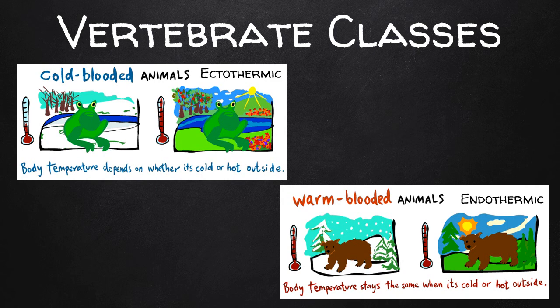Some vertebrates are ectothermic and some are endothermic. Ectothermic animals are cold-blooded — their body temperature changes with the temperature of the surroundings. Fish, amphibians, and reptiles are ectotherms. Endothermic animals are warm-blooded — their body temperature does not change with the temperature of the surroundings. Birds and mammals are endotherms.